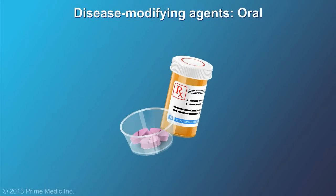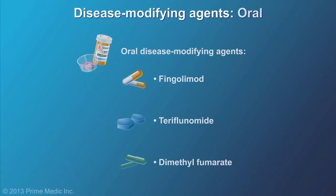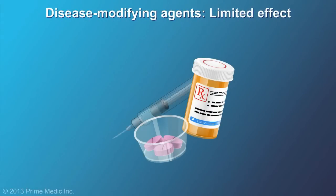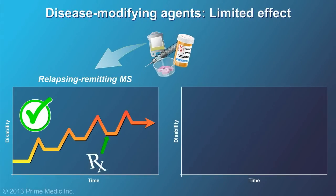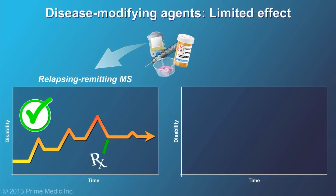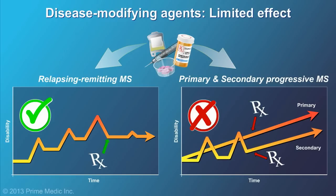More recently, medications that can be taken by mouth have become available. Unfortunately, even though all these disease-modifying agents have been proven effective at altering the disease course of relapsing-remitting MS, none have been shown to be particularly helpful for people suffering from primary progressive or secondary progressive MS.